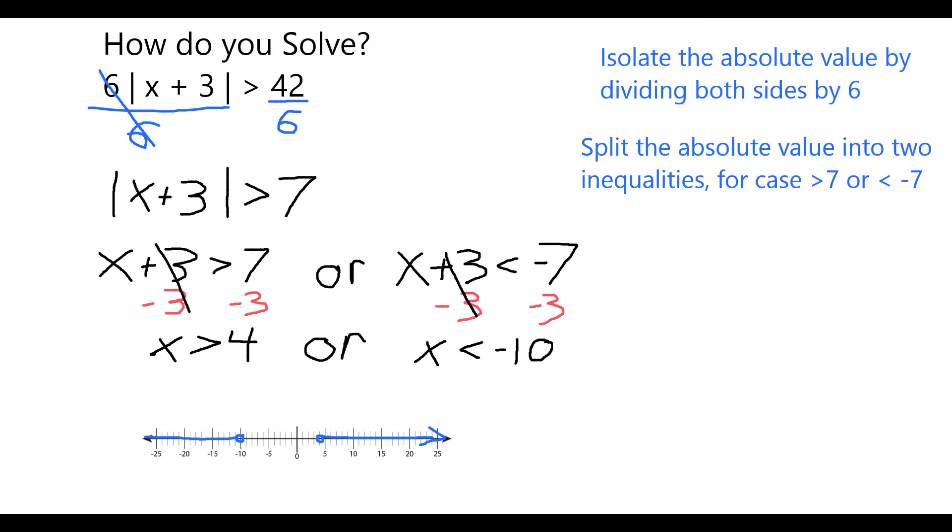I leave them open because this is a strict less than or greater than solution, meaning that the negative 10 itself is not a solution. But as this line represents, anything less than or to the left of it is, and anything to the right of or greater than 4 is a solution.